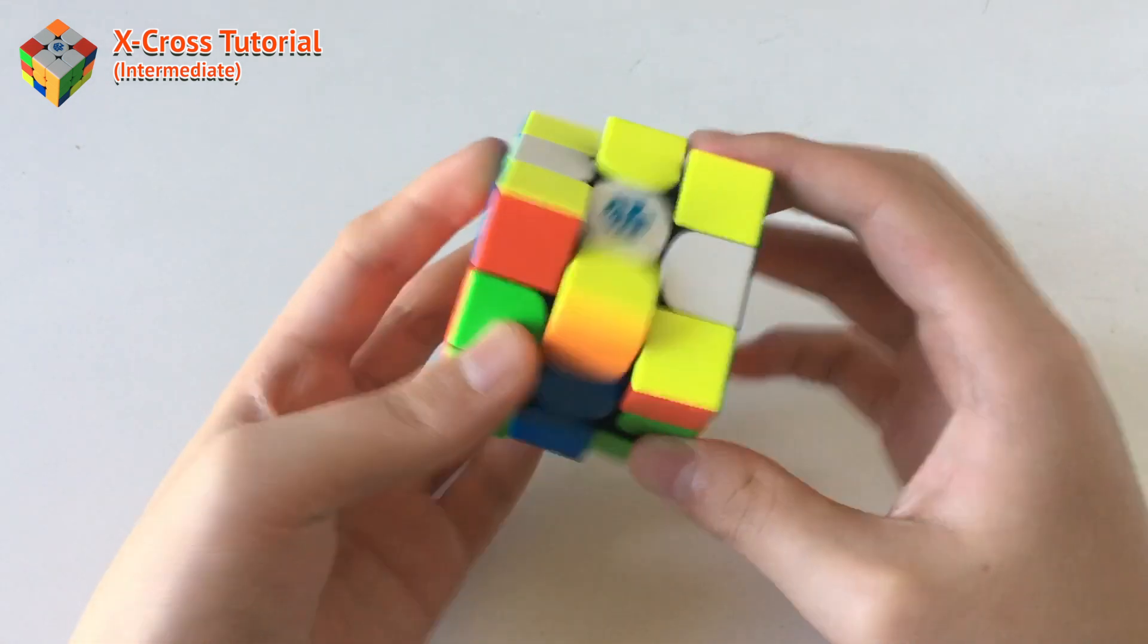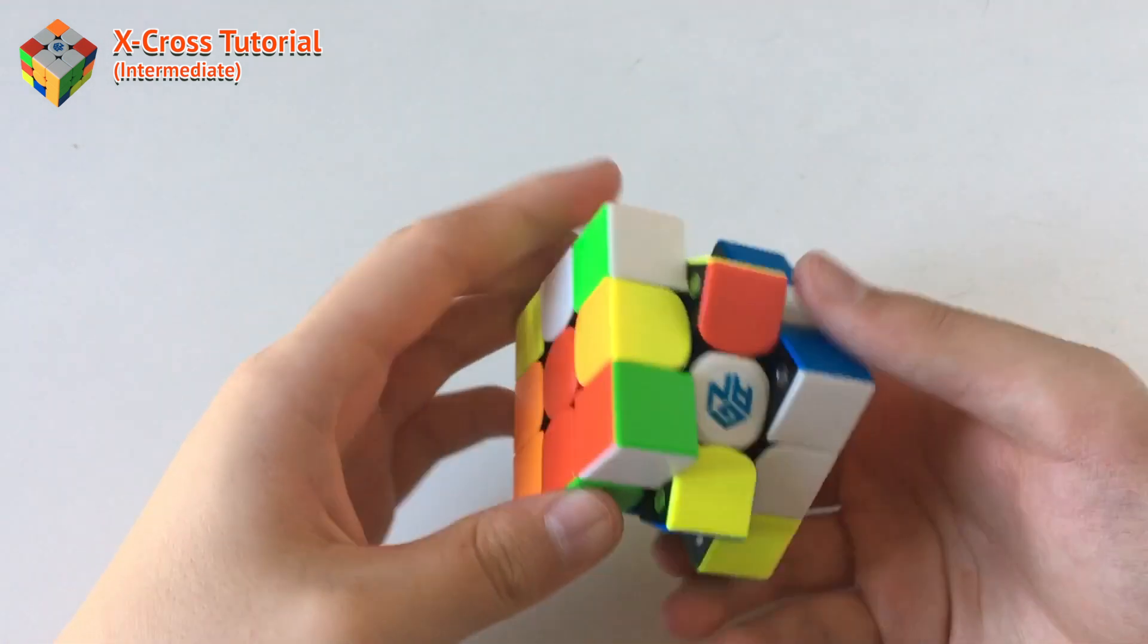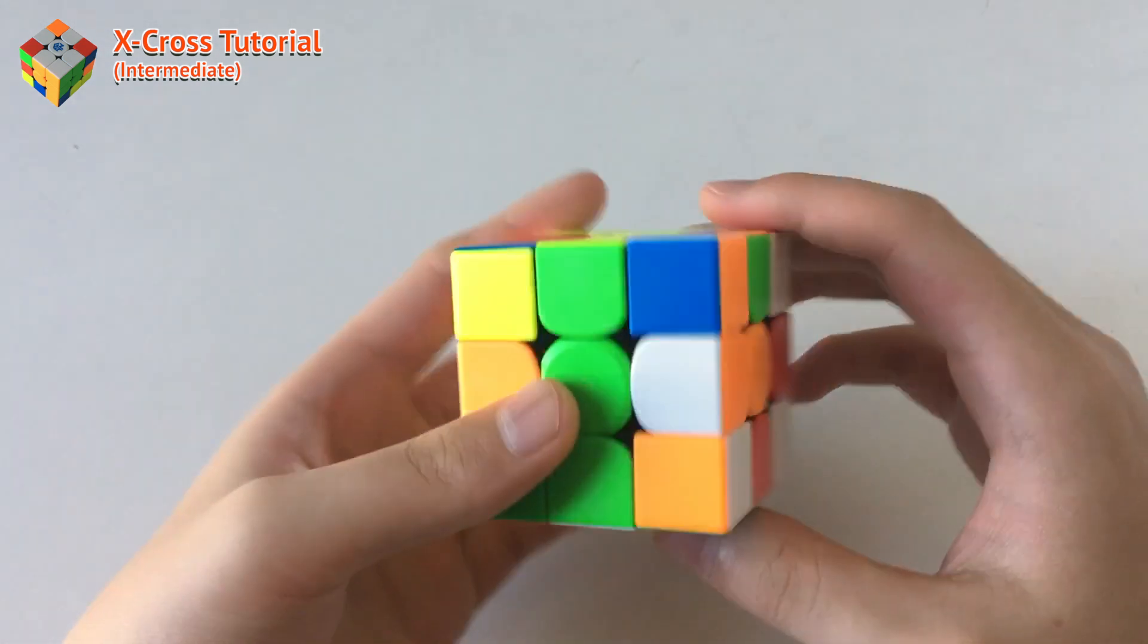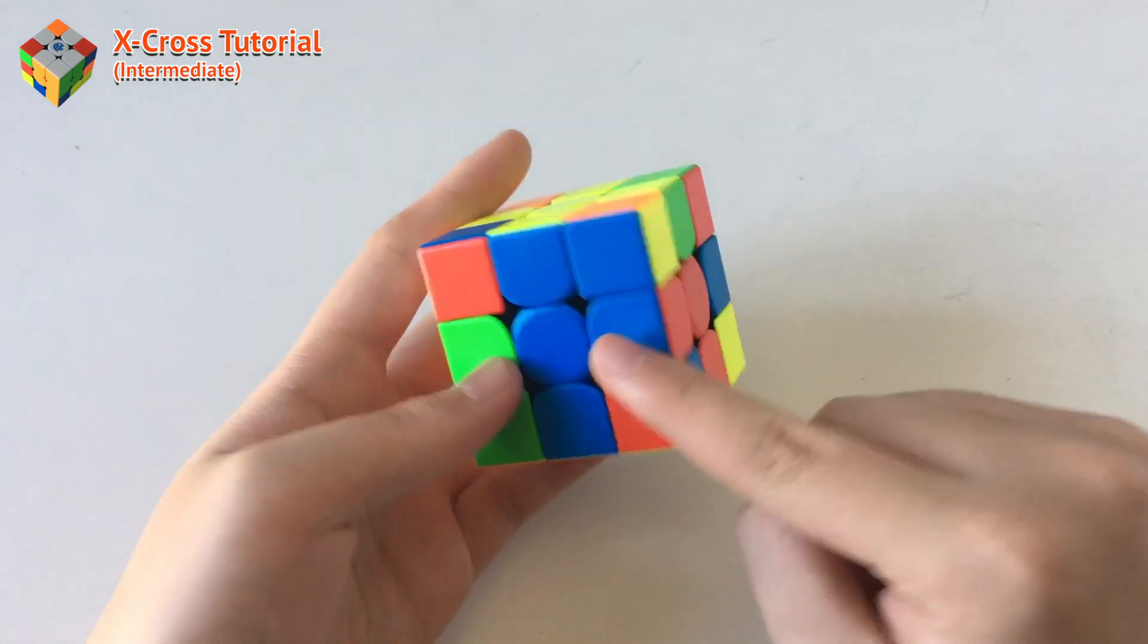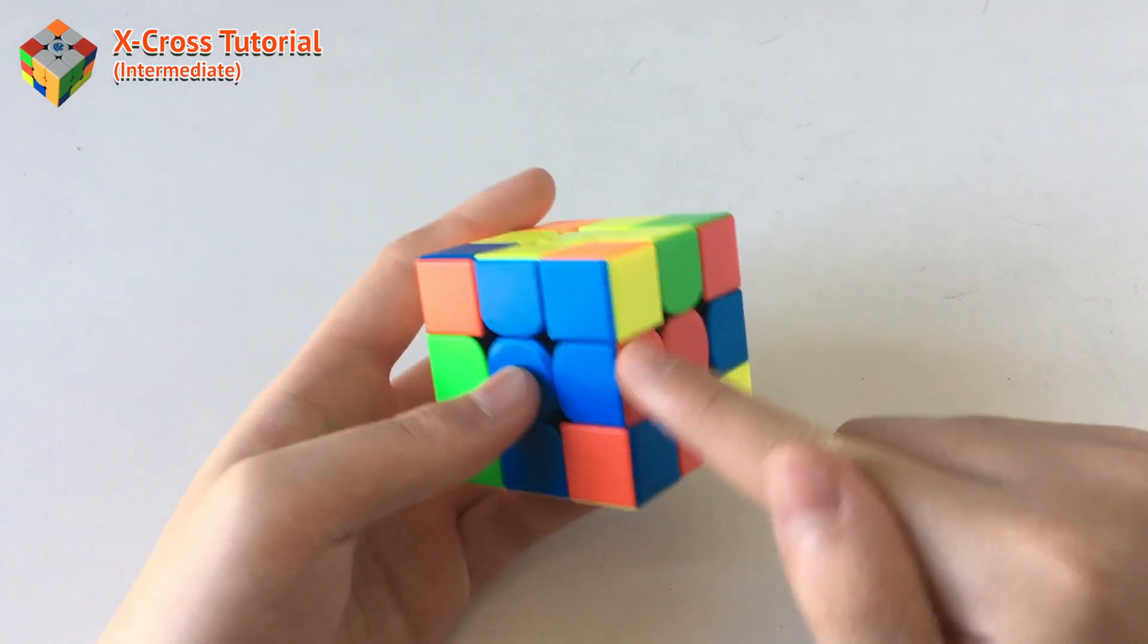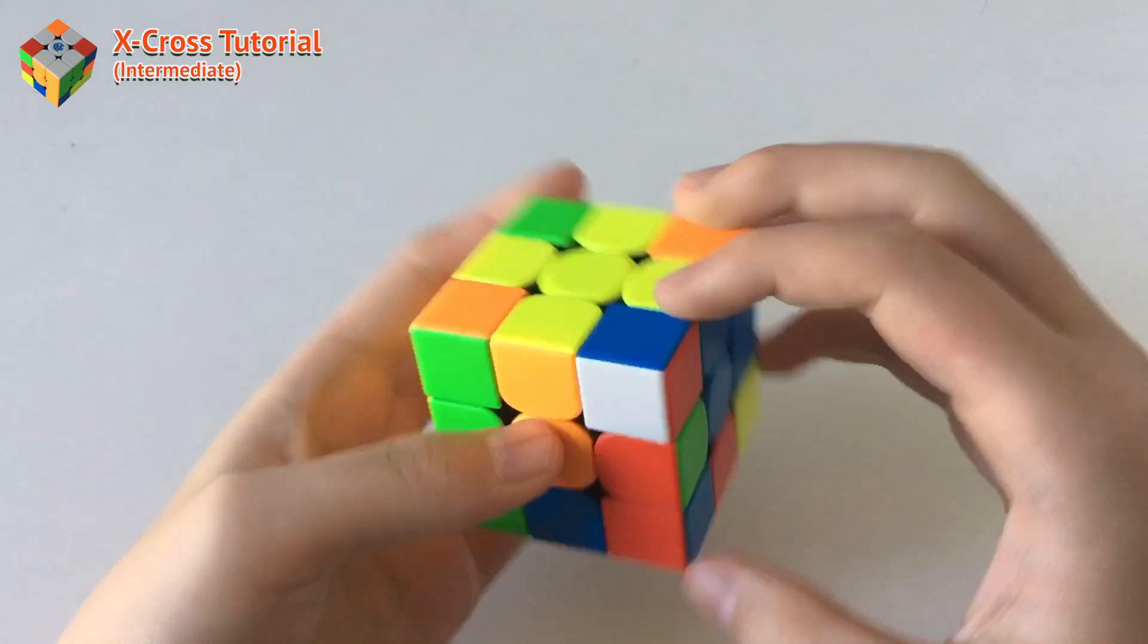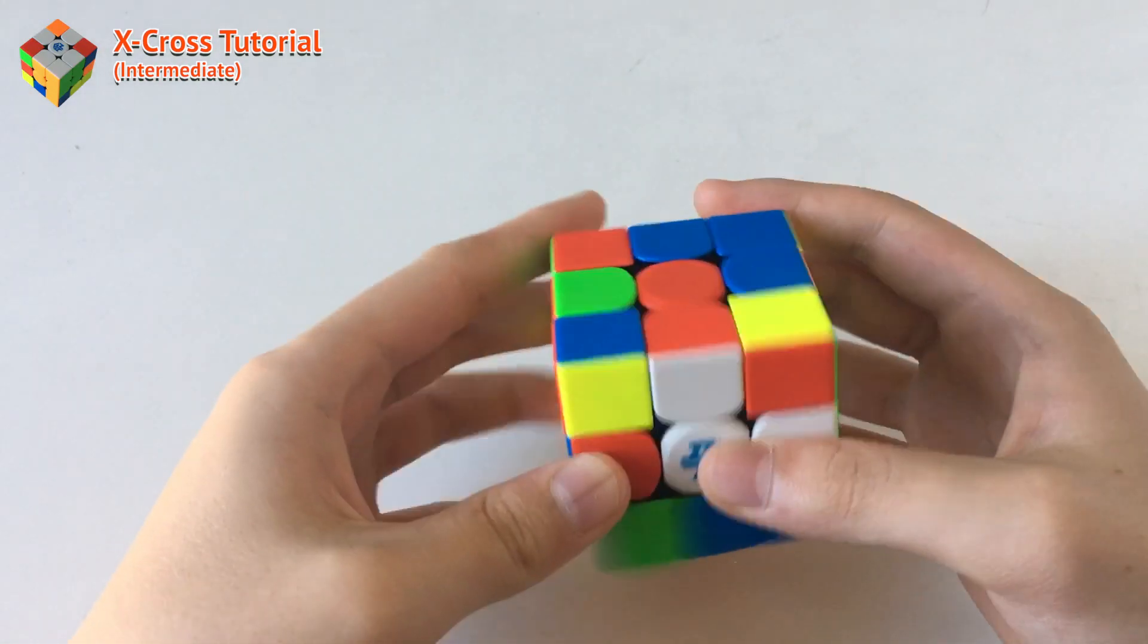I think I did the wrong algorithm there. Anyways, for the x-cross, let's just do some more demonstration solves. Basically, what are the signs that you have an x-cross? First, and the most obvious one, is that you have something like this. So if you have something like this, you could basically insert the piece that goes here, which is over here, to that spot. And then you can bring it over. That is the first case of the x-cross.